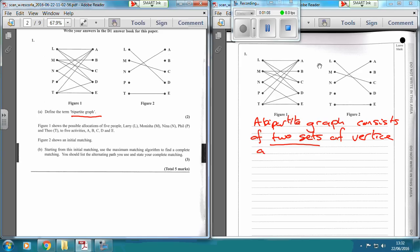You might want to call them sort of A and B. And vertices in set A can only connect to vertices, again you can use vertices or nodes, vertices in set B.